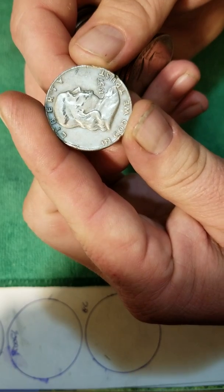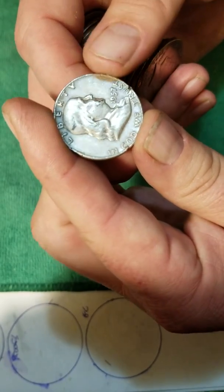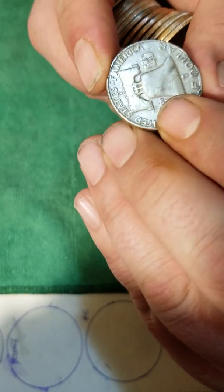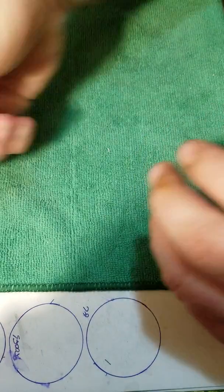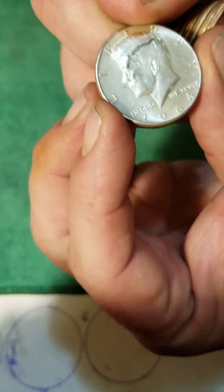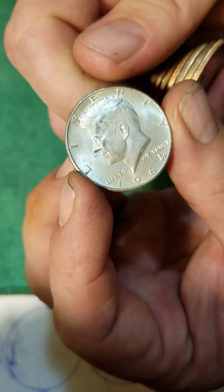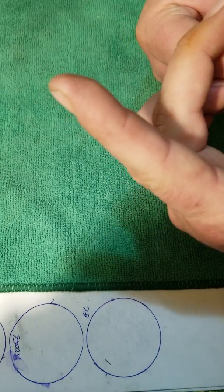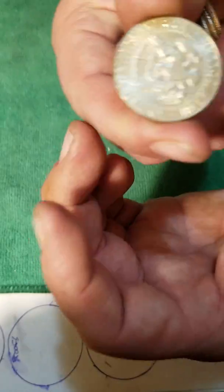And we got Benjamin Franklin, toasted but '57-D, and we have 1964 not in bad shape. Don't see a mint mark yet, there's a D on this one too.